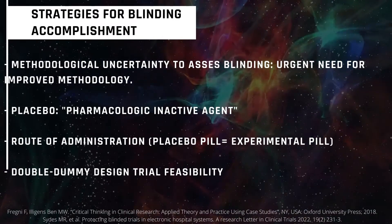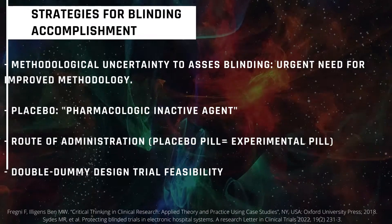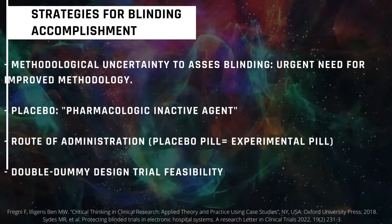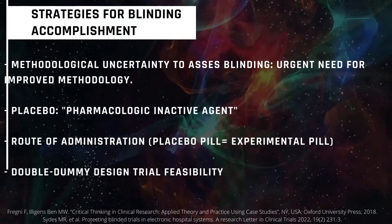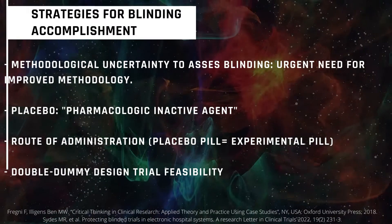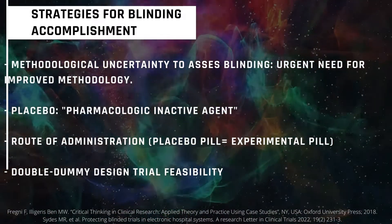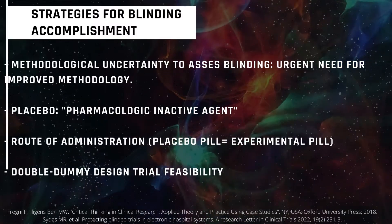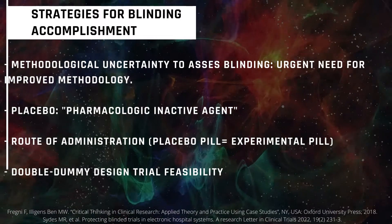Some of the strategies for blinding accomplishment: considering there is a methodological uncertainty to assess blinding, there is an urgent need for improved methodology. Placebo is a pharmacologically inactive agent, and the route of administration must be the same if possible. For example, if it is a pill placebo, we should try our best to match the experimental pill and not use a topical or any other different presentation.